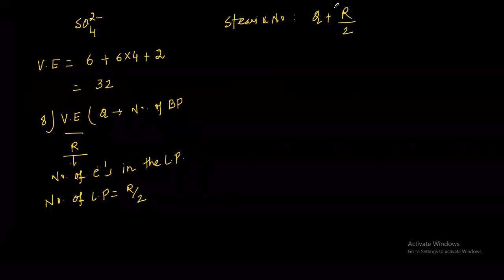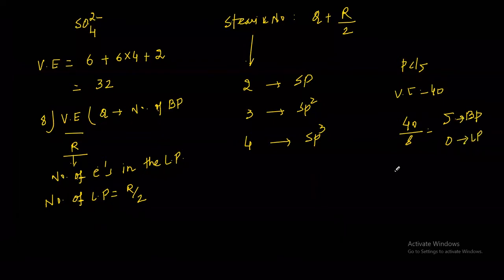If steric number is 2, hybridization is sp. If 3, sp2. If 4, sp3. If 5, sp3d, and so on. For PCl5, valence electron is 40. 40 divided by 8 gives 5 bond pairs and 0 lone pairs, so steric number is 5, hybridization is sp3d.